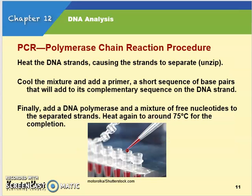For PCR steps: first, you heat the DNA strands, which causes them to unzip. Then you cool the mixture and add a primer — a short sequence of base pairs that binds to the complementary sequence of the DNA strand. For example, if the complementary sequence was AAG, the primer would be TTC. Finally, you add a DNA polymerase — the -ase ending means it's an enzyme — along with a mixture of free nucleotides: A's, T's, C's, and G's. Then you heat it again to around 75 degrees Celsius.